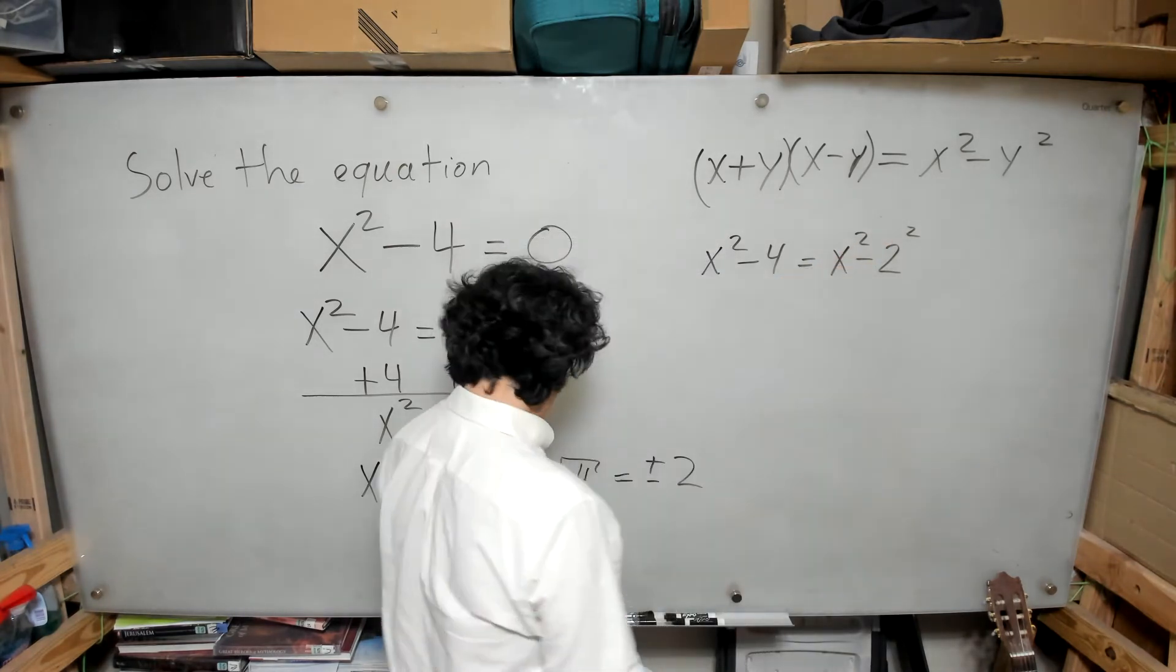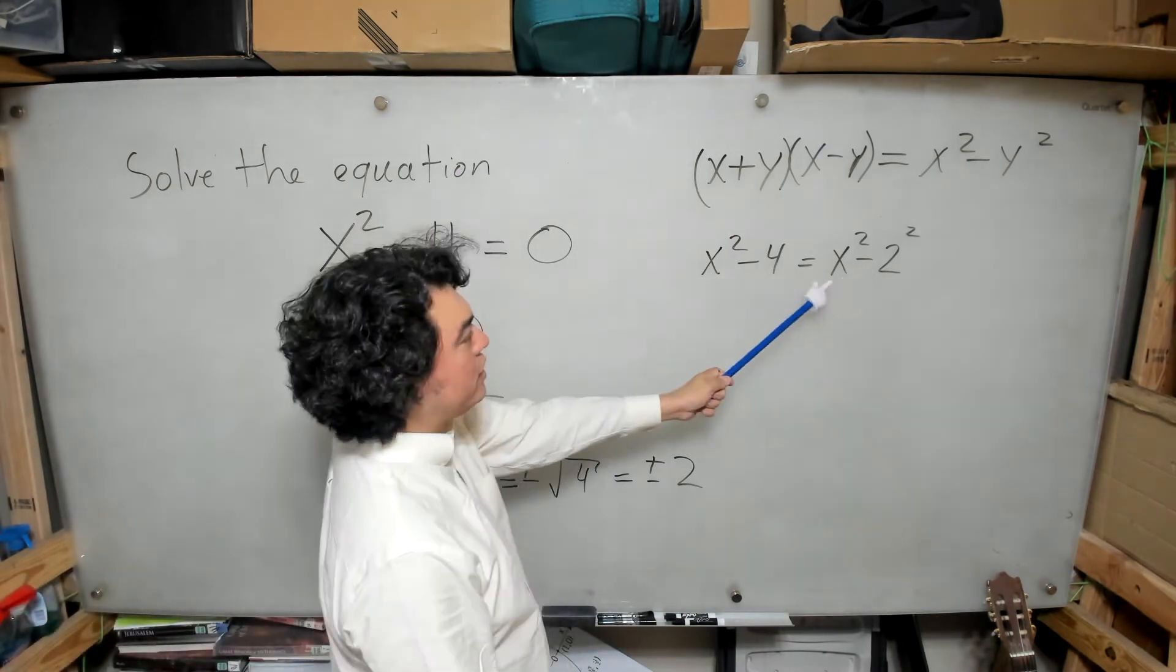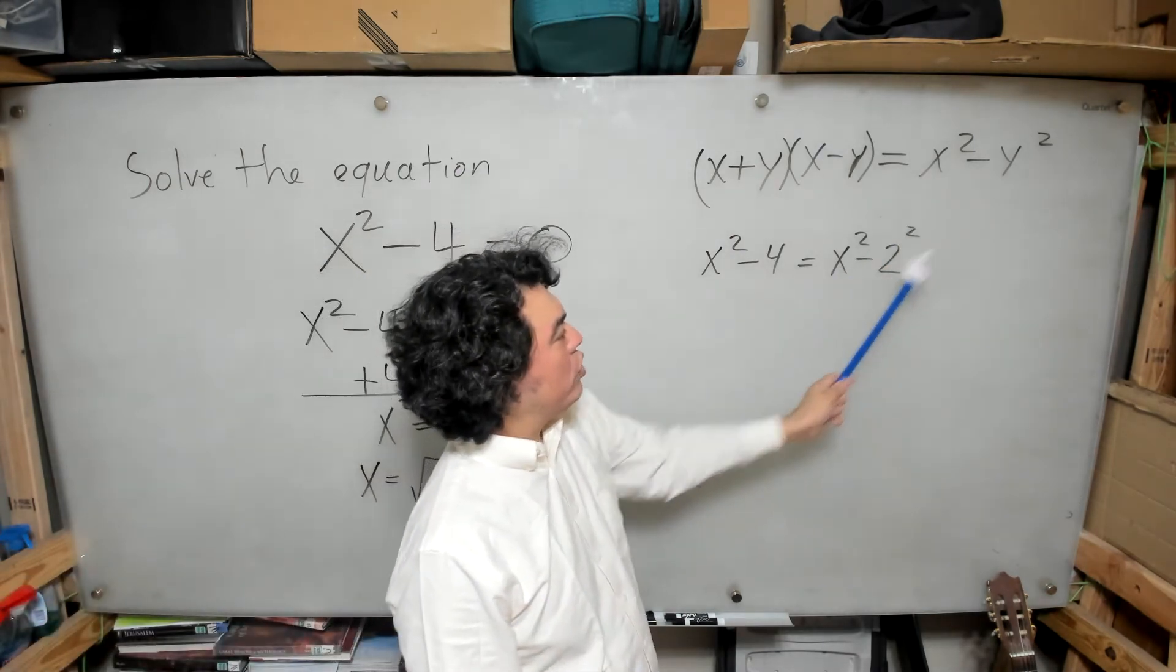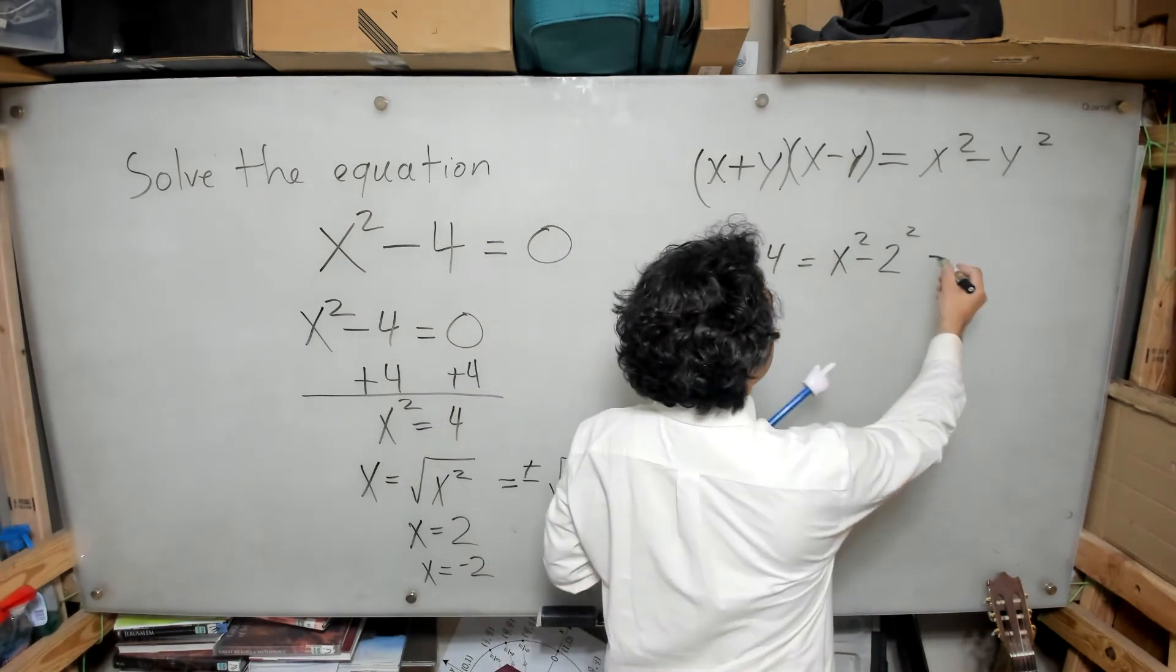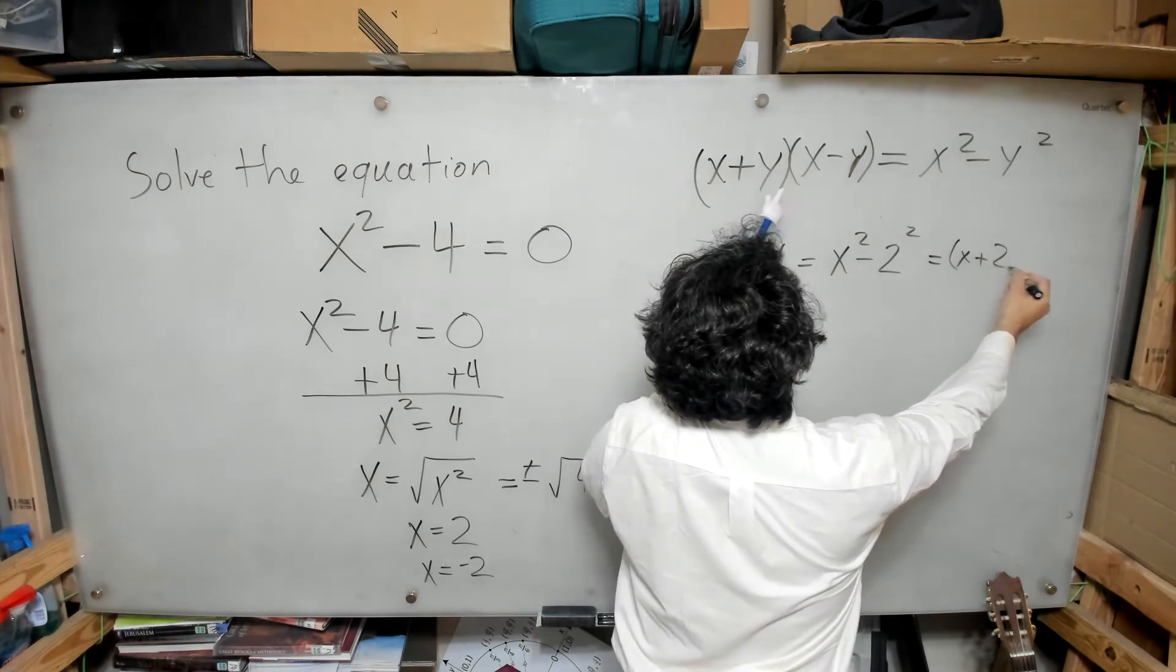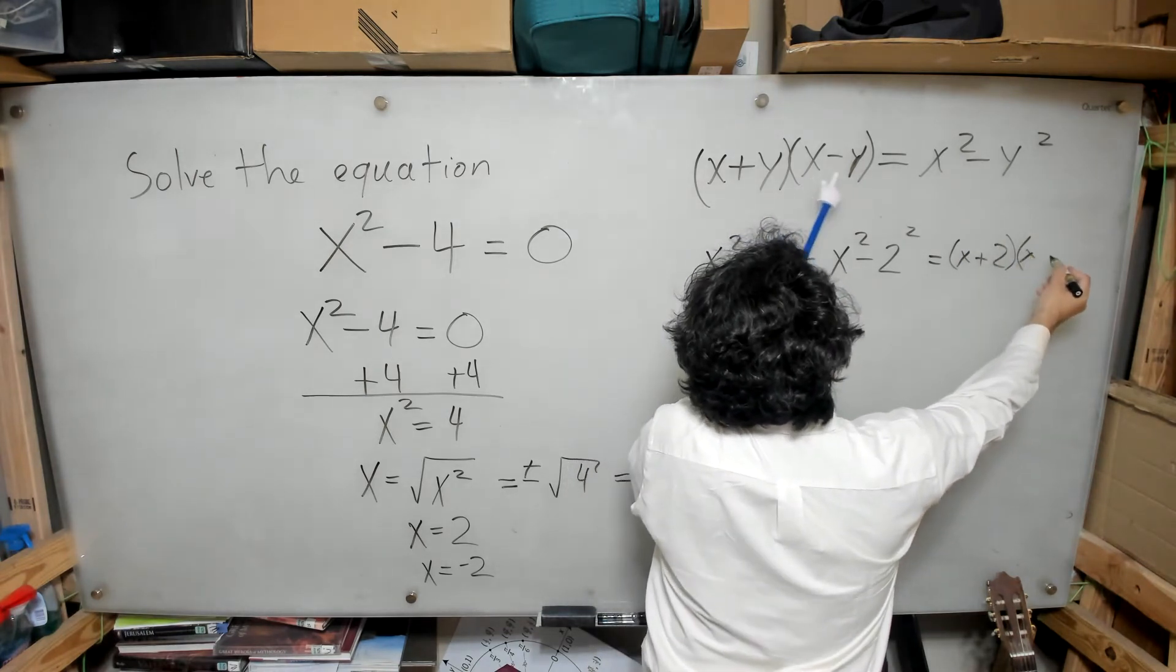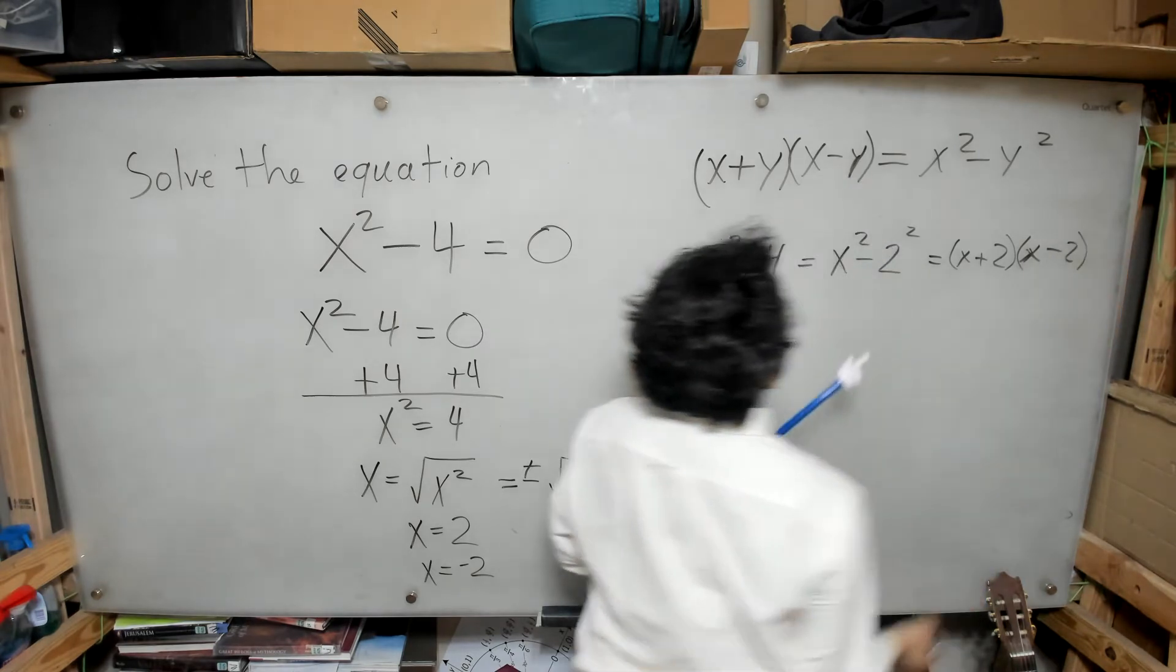And so therefore, this is my x, my 2 is my y, and so I can just plug into this formula to factorize it. So it's going to be x plus 2 times x minus 2.